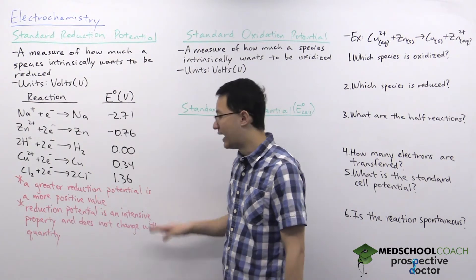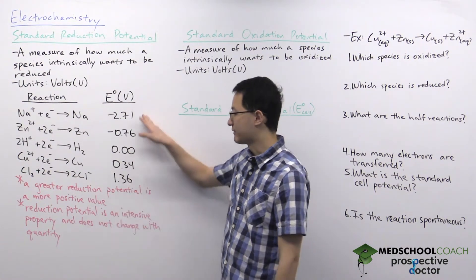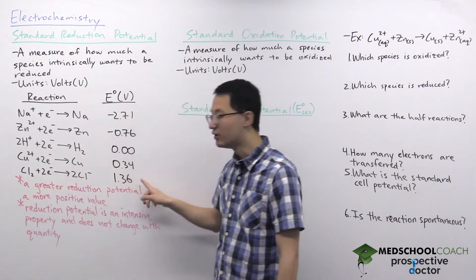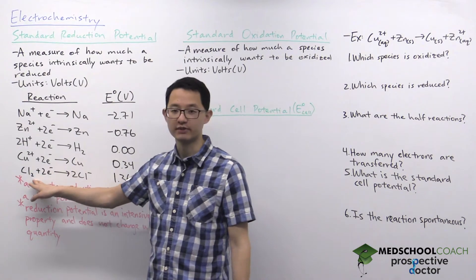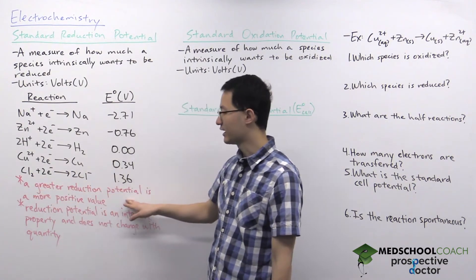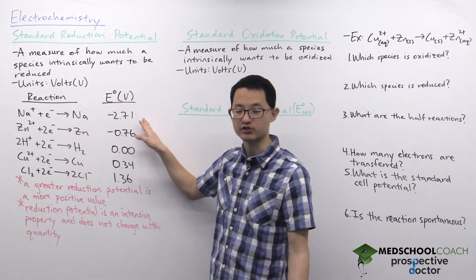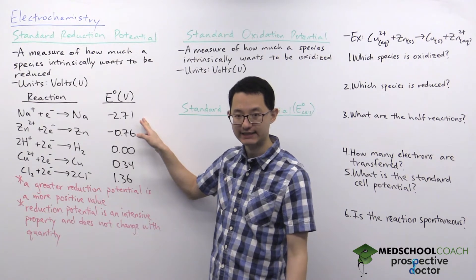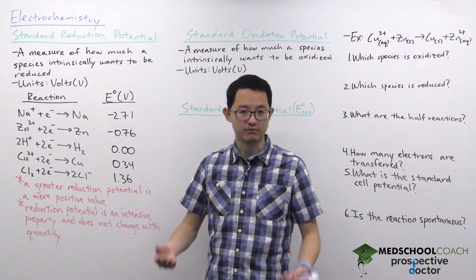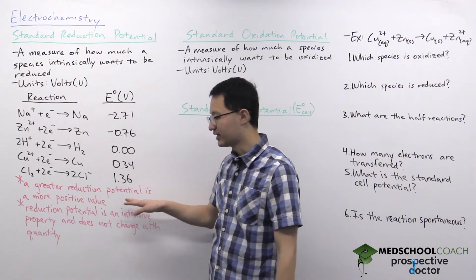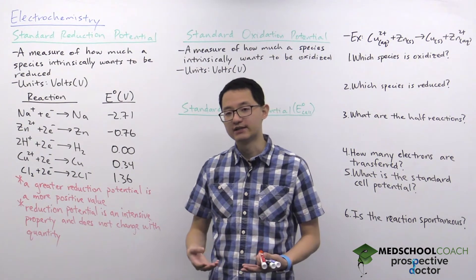Standard reduction potentials can be both positive and negative values. A greater reduction potential is a more positive value, so chlorine has the most positive value and therefore the greatest reduction potential — meaning chlorine wants to be reduced the most. Sodium has the most negative or smallest reduction potential, so it wants to be reduced the least.